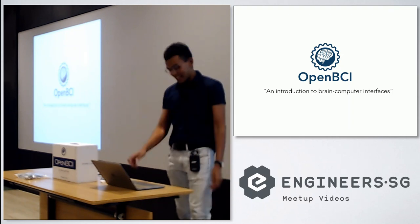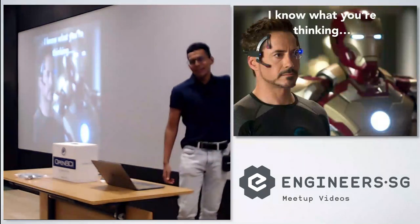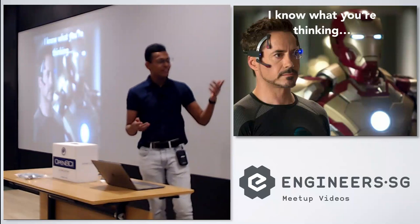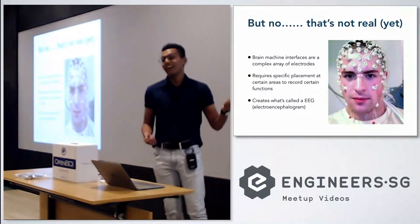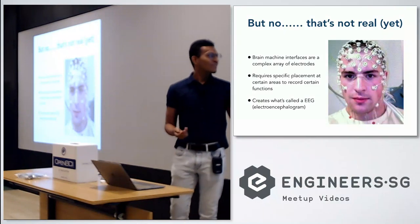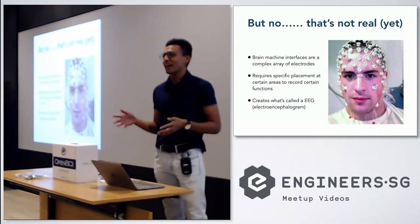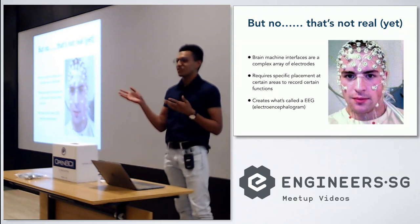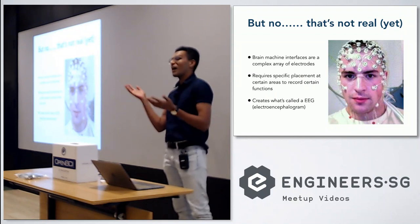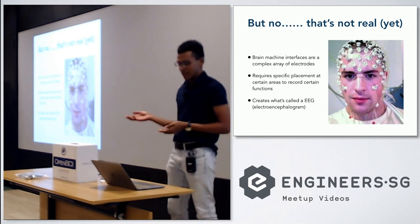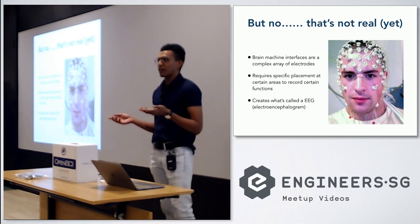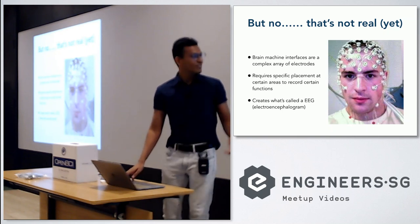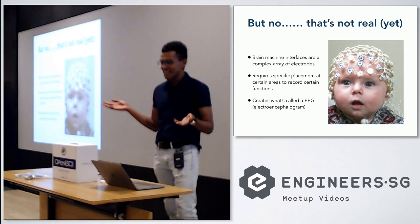So I already know what you guys are thinking, right? When you say brain computer interface, you expect the super futuristic kind of stuff. But brain computer interfaces actually look really ugly right now. They are these super complex arrays of electrodes. It requires very specific placement around your head to get electrical signals from some part of your brain, depending on where the electrodes are placed. This creates what's called an EEG, or electroencephalogram. This guy's ugly, so let's just replace him with babies. Now it looks significantly cooler.